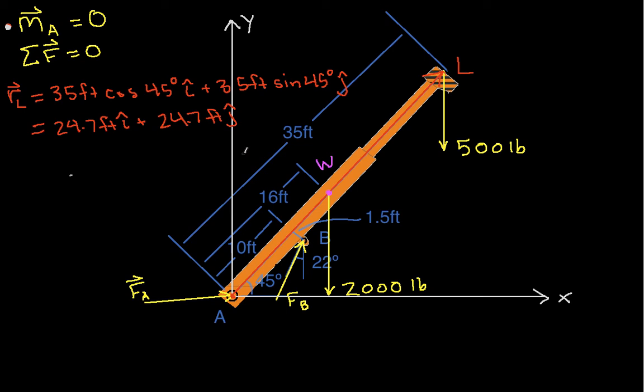And we get that the position vector Rw is going to be 16 feet cosine 45 degrees times i-hat plus 16 feet sine 45 degrees j-hat, which when you work out you get that this is 11.3 feet i-hat plus 11.3 feet j-hat.